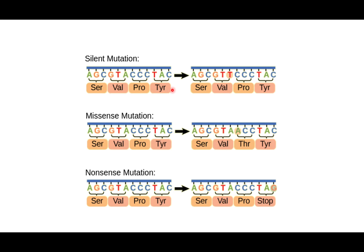Looking at the diagram: for valine we have GTA, but we can also code for valine using GTT — so when A is replaced by T it still codes for valine, making it a silent mutation. For missense, if we have three C's and replace one C with an A, we get threonine instead — a different molecule — that's a missense mutation. For nonsense, tyrosine is coded by TAC, but TAG is a stop codon, so replacing the C with a G creates a stop codon and protein synthesis stops right there.